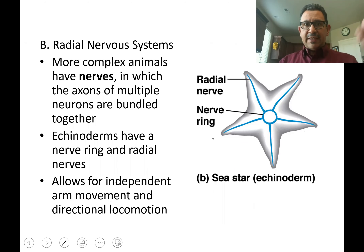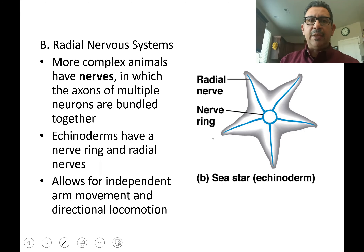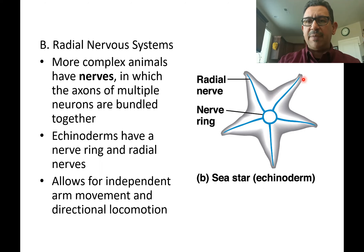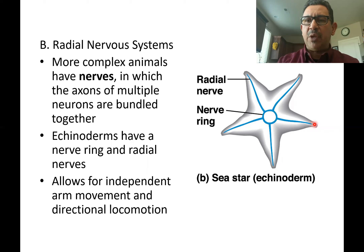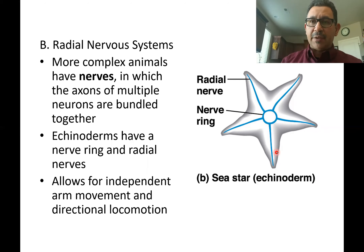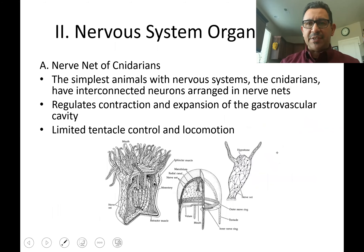Moving up in complexity, the next more complex nerve organization is the radial nervous system of echinoderms. Echinoderms have a five-part body symmetry, and there is an organization of nerves coming from a central nerve ring. Individual radial nerve tracts move outward, helping coordinate the locomotion of independent arms — an advantage that cnidarians didn't have.